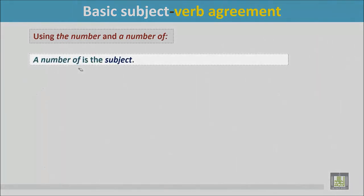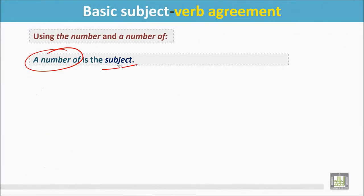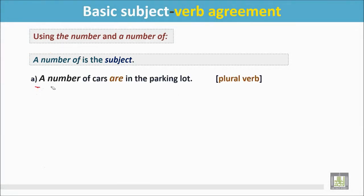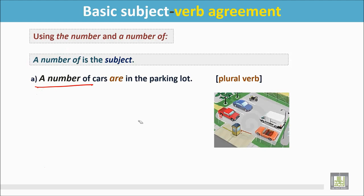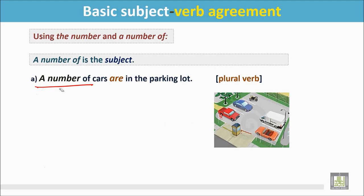Now we use 'a number of' as the subject of a sentence. A number of cars are in the parking lot. In this picture, we see there are several cars in the parking. 'A number of' usually mentions a plural number, so the verb is plural here.